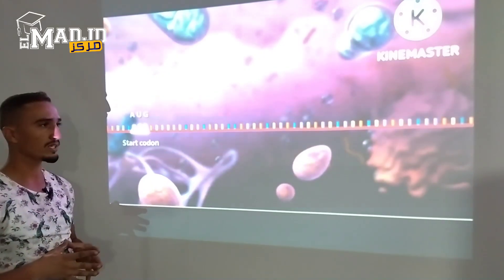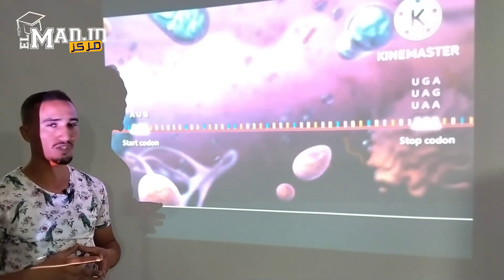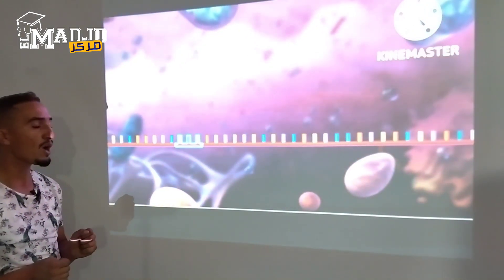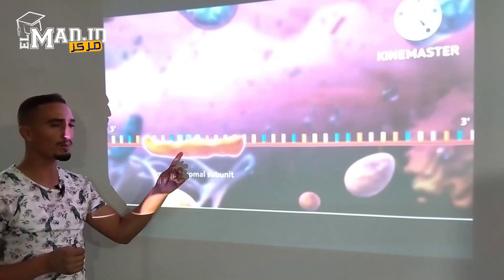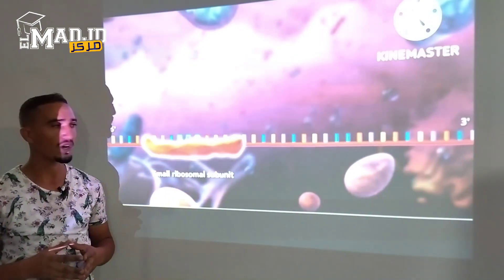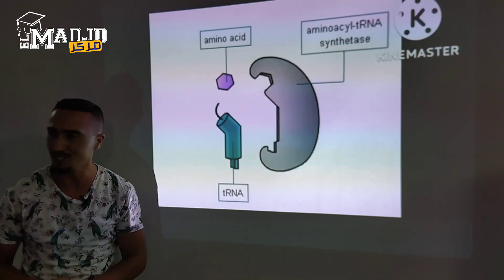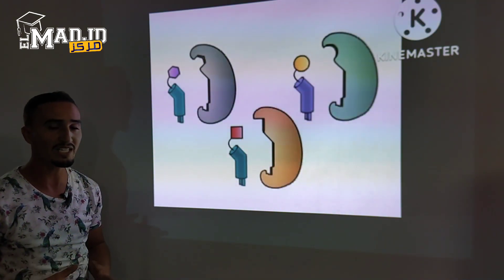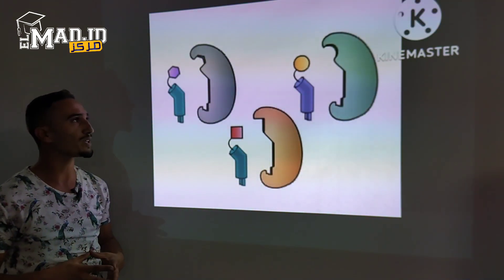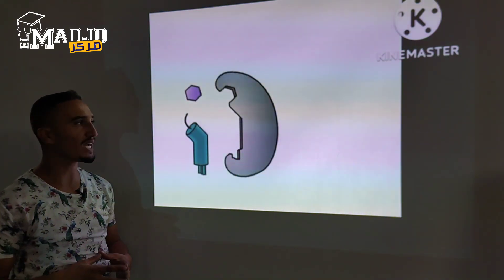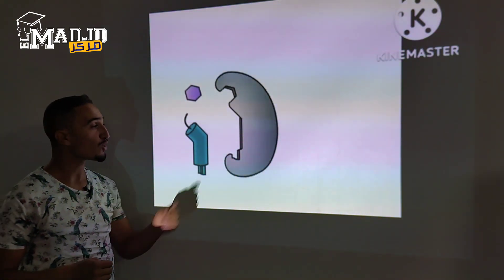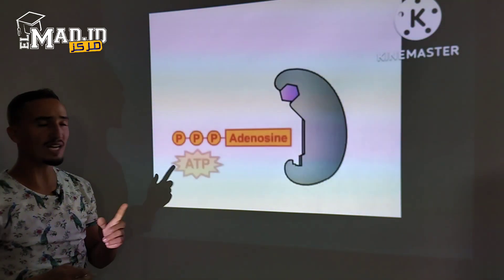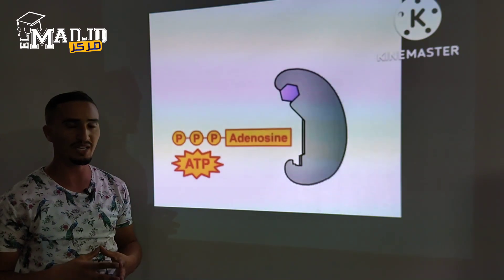There are four special codons: one that codes for start, and three that code for stop. Translation begins with the messenger RNA strand binding to the small ribosomal subunit upstream of the start codon. Attachment of an amino acid to its respective tRNA is catalyzed by the aminoacyl-tRNA synthetase enzyme. One molecule of enzyme corresponds to one molecule of amino acid.